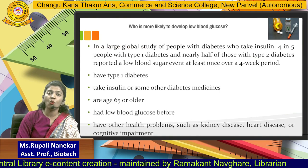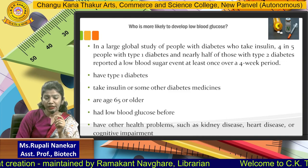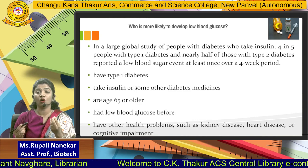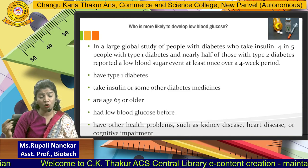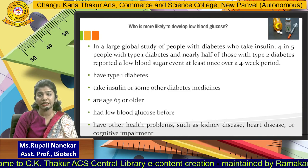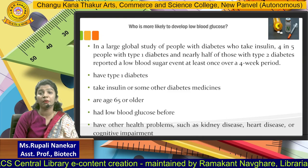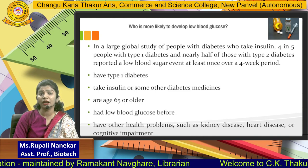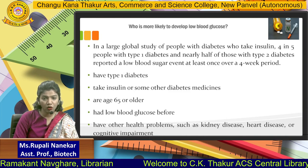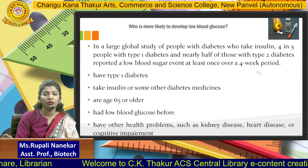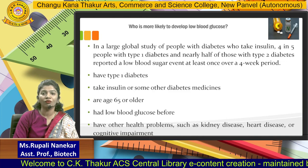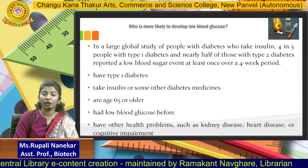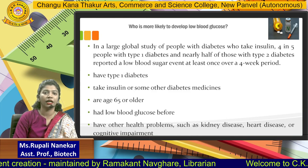Let's look at who is more likely to develop this blood glucose condition. In the global population, people above the age of 65 are at risk. You can also have other health issues such as kidney stones, heart disease, and cognitive impairments that can contribute to low blood glucose. It has been seen that type 2 diabetes patients report low blood sugar at least once over a four-week period, since they tend to use insulin to reduce excess glucose. Four in five people can have type 1 diabetes, and type 2 diabetes patients can also develop type 1 diabetes.